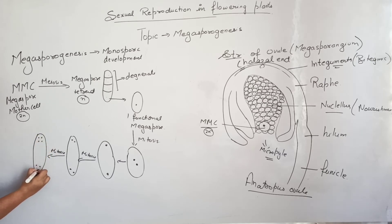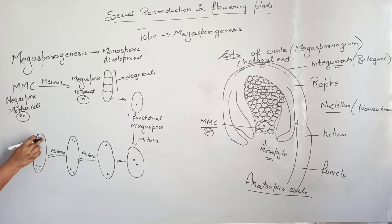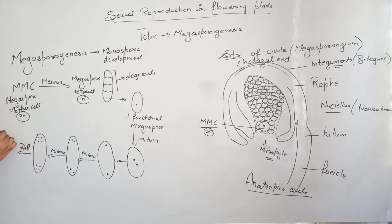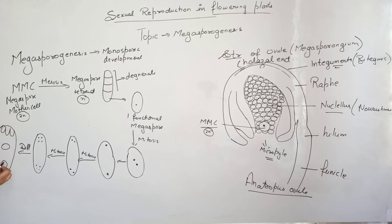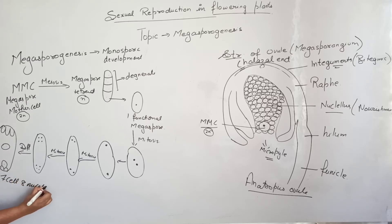Mitosis occurs a third time, forming eight nuclei total — four on each end. These nuclei undergo differentiation: three at each end remain at the poles, and one from each end moves toward the center, where membrane formation occurs, producing the 7-cell 8-nuclei stage.